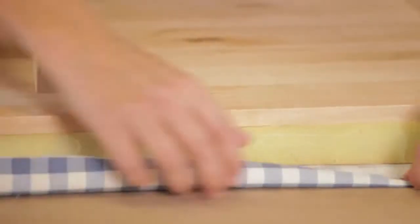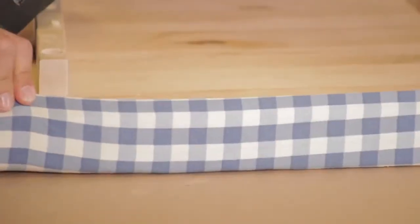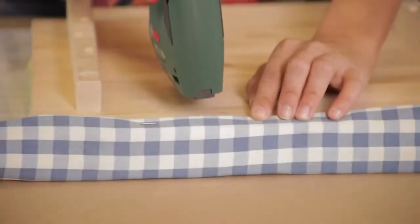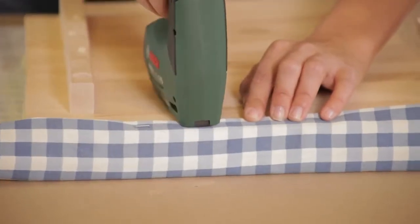We're going to fold the edges because you want it to look nice and neat even from the underneath. We're going to staple using the staple gun across the bottom here.